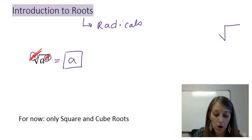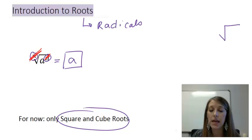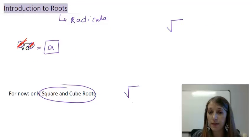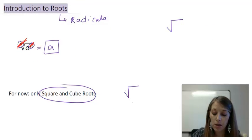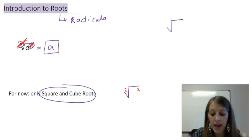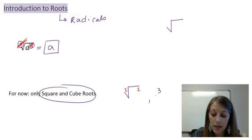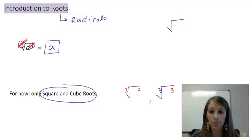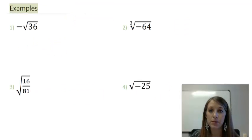For now, we're only going to focus on square roots and cube roots — later in the class we'll go into more depth. Square roots are written with the radical symbol; if there's no number in the little crevice, it is a square root, the opposite of squaring. Cube roots are indicated with a 3 in the crevice, and are the opposite of the third power. I suggest you pause the video and see if you can figure out the examples on your own.